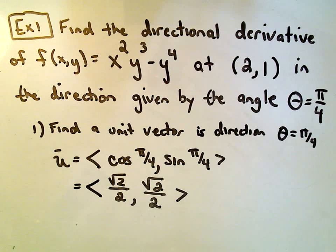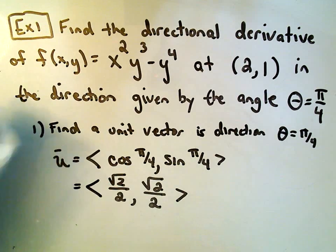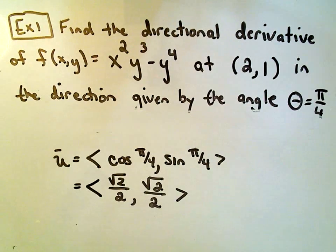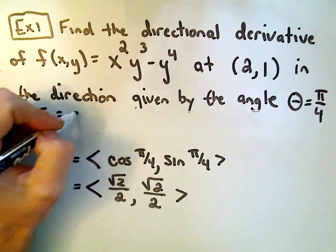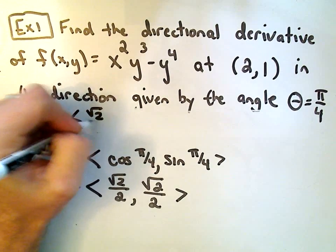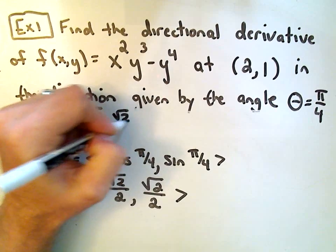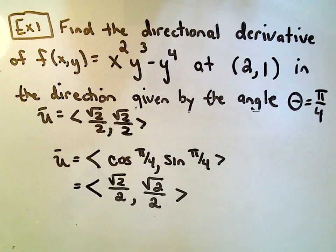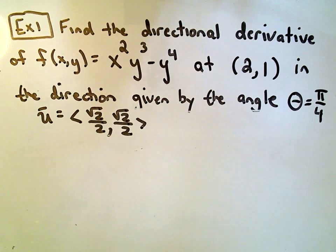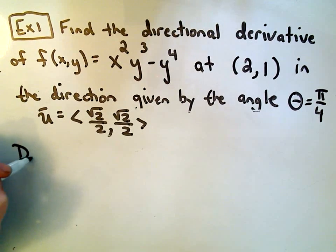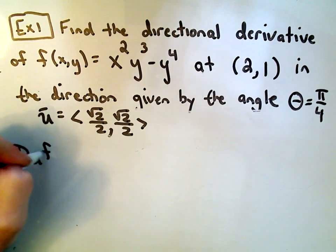Now I just have to start taking partial derivatives and evaluate it at my point (2,1). So we've got our unit vector, so I'm gonna put that up here off to the side: √2/2, √2/2. According to the formula, it says the directional derivative of the function.